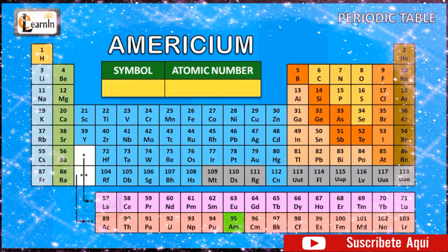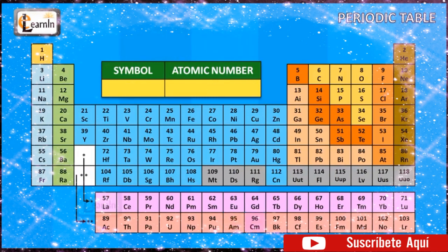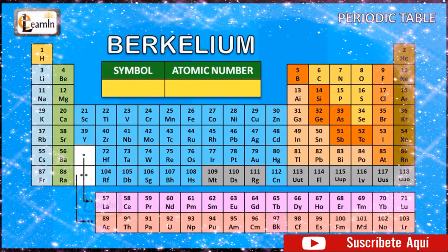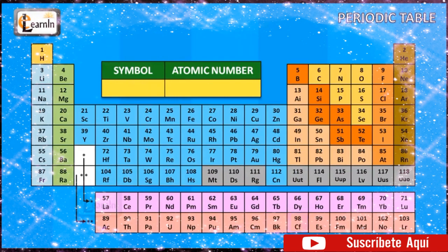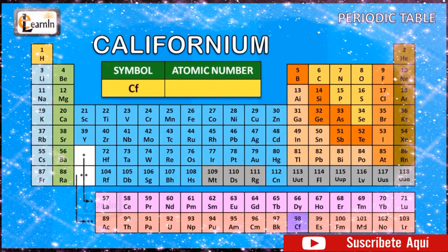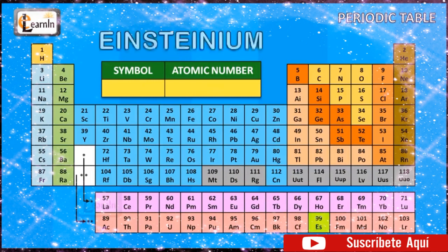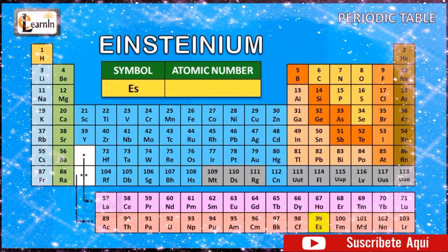The element americium is represented as Am and has an atomic number of 95. The element curium is represented as Cm and has an atomic number of 96. The element berkelium is represented as Bk and has an atomic number of 97. The element californium is represented as Cf and has an atomic number of 98. The element einsteinium is represented as Es and has an atomic number of 99.